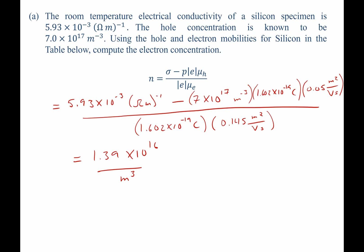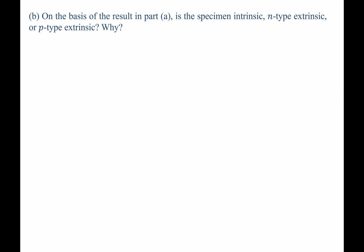Now that we have that, we can go ahead and move on to Part B. Part B says, based on the values that you got in Part A, is the sample intrinsic, extrinsic n-type, or extrinsic p-type?